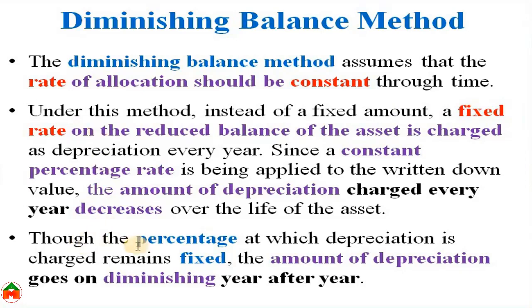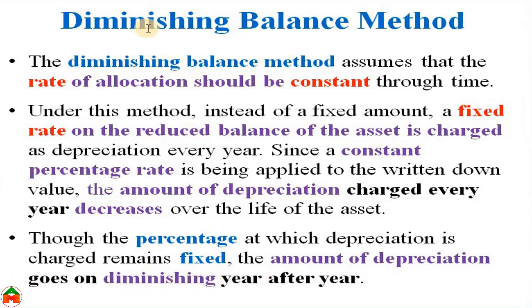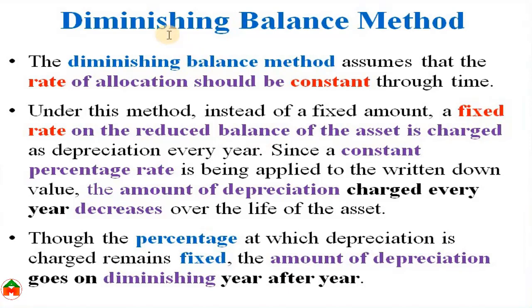Though the percentage at which the depreciation is charged remains fixed, the amount of depreciation goes on diminishing year after year. That's why the method is called the diminishing balance method — because the fixed rate is applied to the written down value that reduces, or diminishes, year after year.